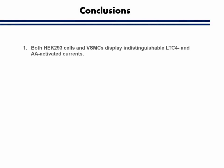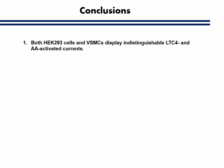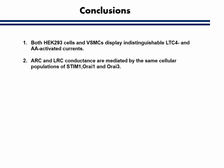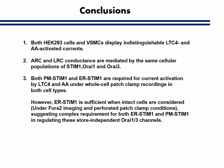In conclusion, both HEK 293 cells and vascular smooth muscle cells display indistinguishable LTE-24 and arachidonic acid activated currents. ARC and LARC conductances are mediated by the same cellular populations of STIM-1, ORI-1, and ORI-3 in both cell types. Both PM STIM-1 and ER STIM-1 are required for current activation by LTE-24 and arachidonic acid in whole-cell patch clamp recordings in both cell types. However, ER STIM-1 is sufficient when intact cells are considered — for example, under Fura-2 imaging and perforated patch clamp conditions — suggesting complex requirements for both ER STIM-1 and PM STIM-1 in regulating these store-independent ORI-3 channels.